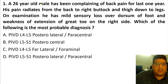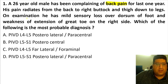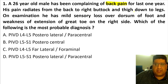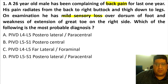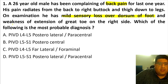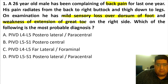A 26-year-old male has been complaining of back pain for the last one year. The pain radiates from the back to the right buttock and thigh, down to the legs. There is some radiculopathy. On examination, there is a mild sensory loss over the dorsum of the foot, and weakness of extension of the great toe on the right side.